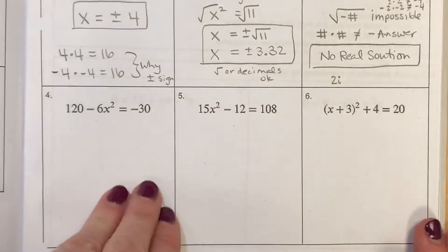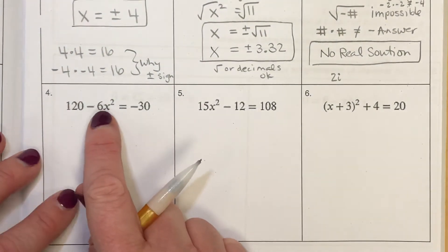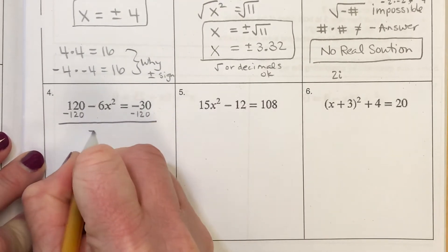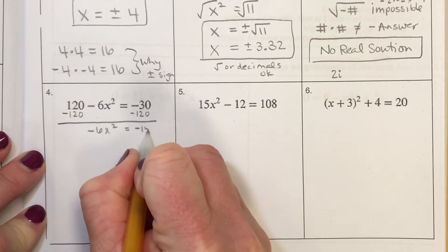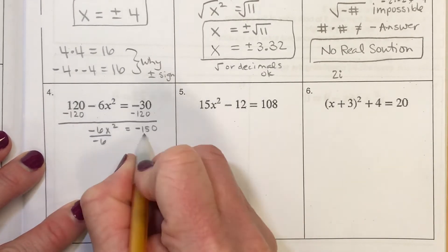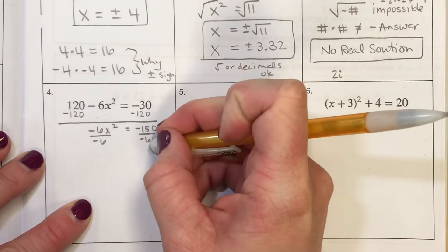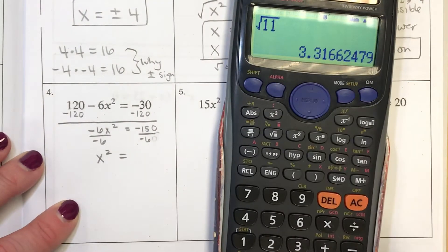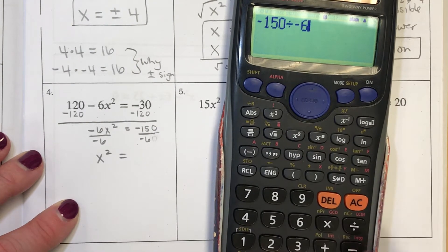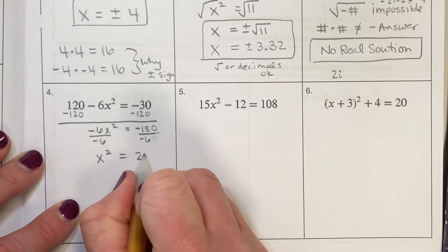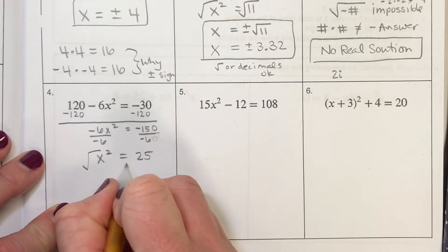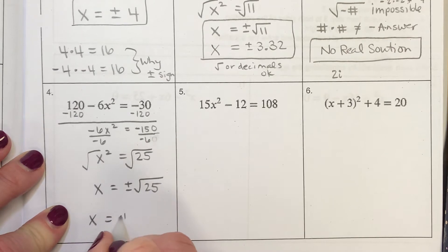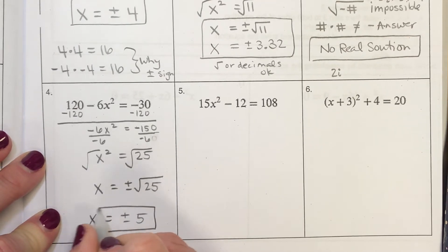Here I'm going to isolate my square term by subtracting 120 to get negative 6x squared equal to negative 150. Then I divide by 6 — negative 150 divided by negative 6 gives me 25, positive because a negative divided by a negative is positive. Now I apply the square root symbol with plus and minus, and the square root of 25 is 5.